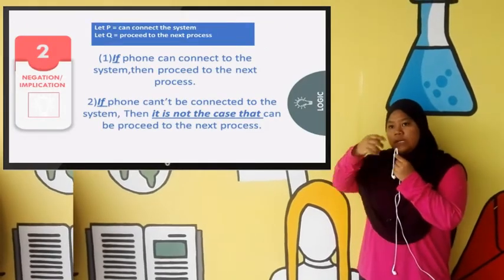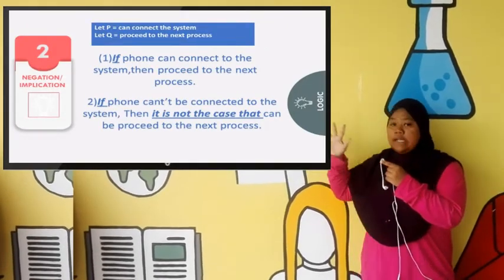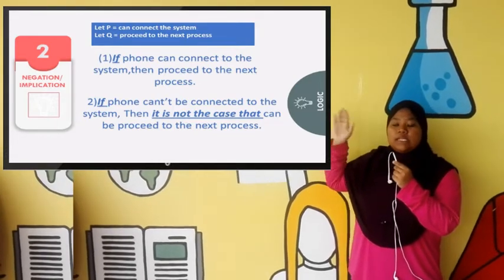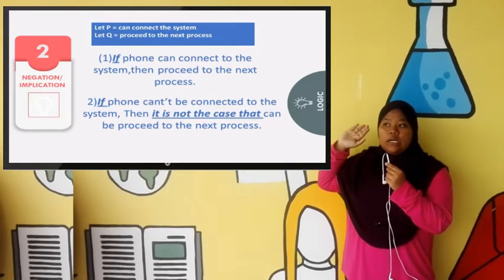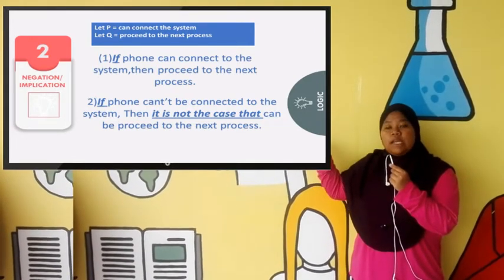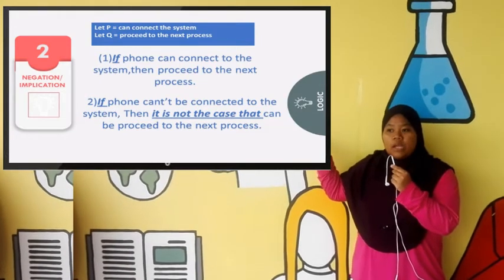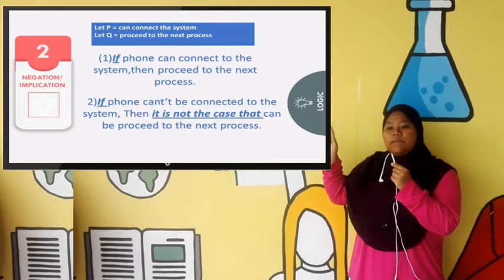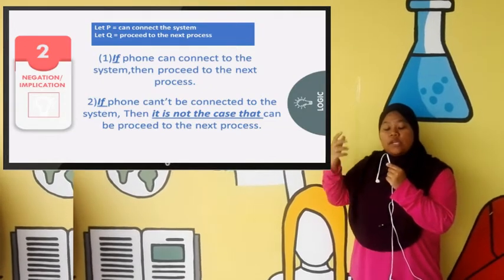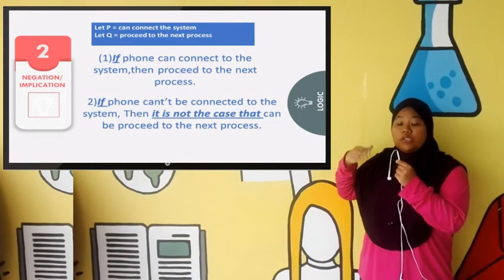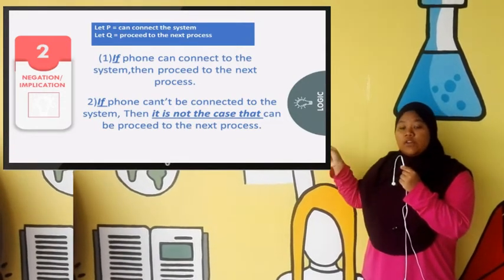For the negation, you can see in this slide, P represents can connect phone to the machine and Q represents proceed to the next process. If P, if you can connect your phone to the next process, but if not...